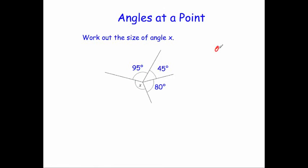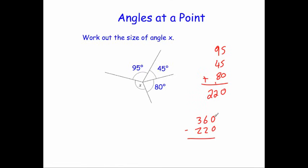So let's line them up: 95, 45, 80, and add up. 5 plus 5 is 10, plus 0 is 10 — put the 0 down, carry the 1. 9 plus 4 is 13, plus 8 is 21, plus 1 is 22. So that's 220 degrees. But we know the whole thing is 360, so 360 minus 220: 0 take away 0 is 0, 6 take away 2 is 4, and 3 take away 2 is 1. So X is 140 degrees.